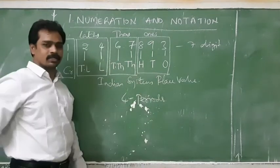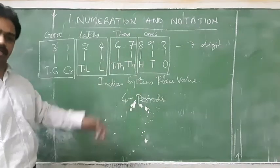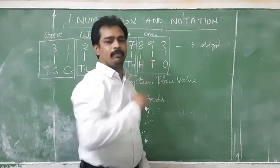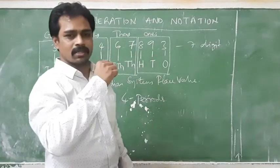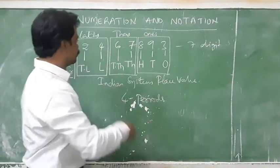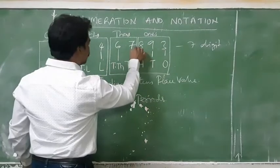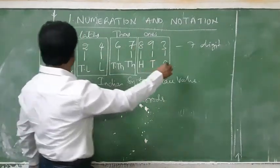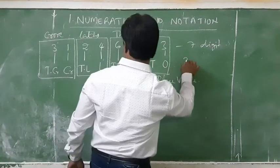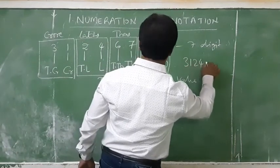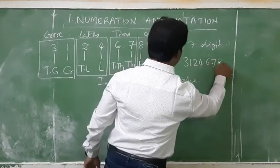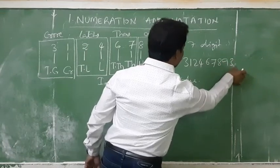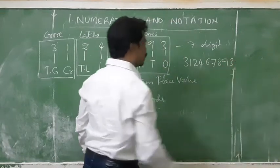Periods and numbers — we will separate them by comma, with the help of commas. The same number I will write here so that you can understand: 3, 1, 2, 4, 6, 7, 8, 9, 3. Same number I have written here.